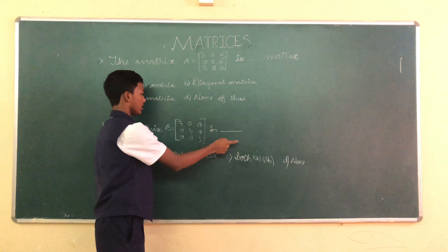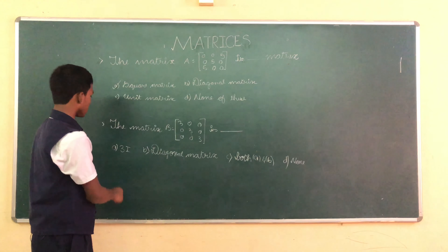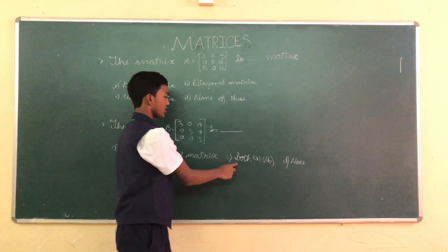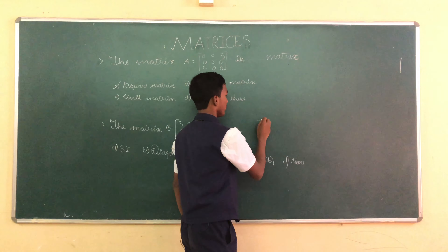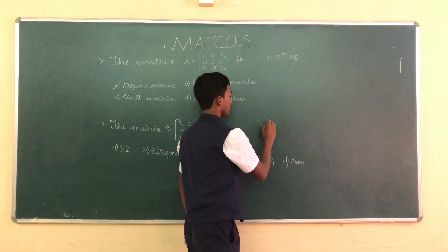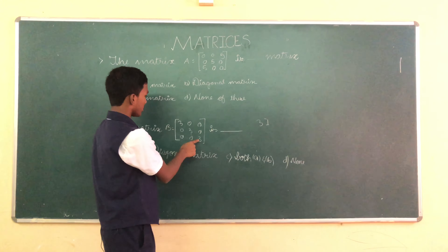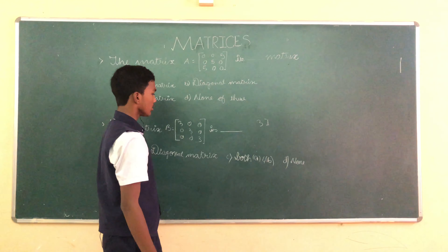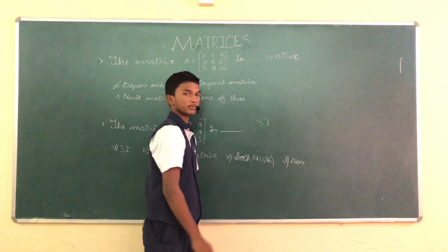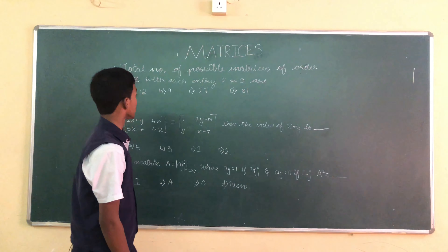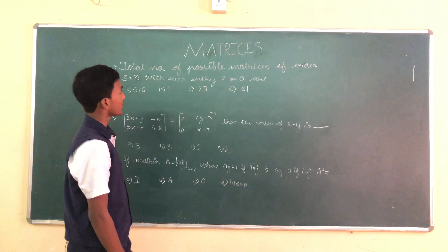Second question: the matrix B equals [3,0,0; 0,0,3] is dash. Option A: 3I. Option B: diagonal matrix. Option C: both A and B. Option D: none. It is in the form of 3I, so it's option A. And it's also a diagonal matrix. Therefore the answer is option C, both A and B.